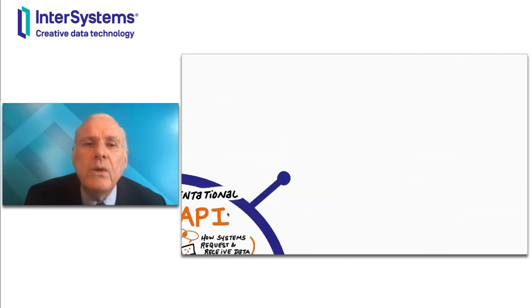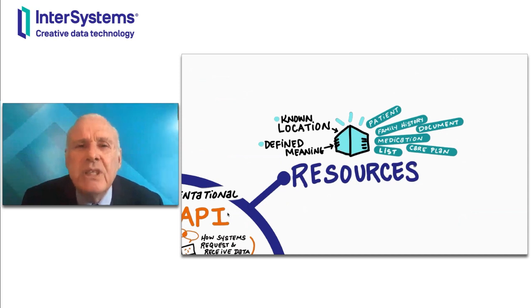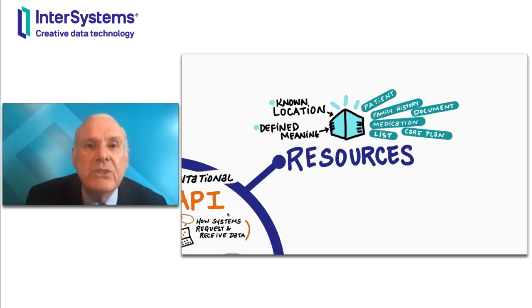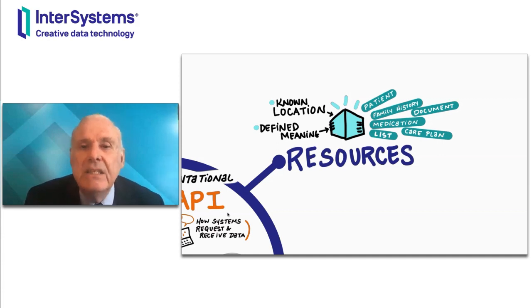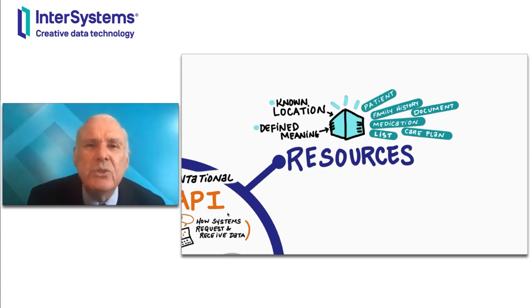There are a few concepts you need to understand to understand FHIR. The first is FHIR resources — resources as in URL, Uniform Resource Locator. FHIR resources have a known location on a server, a defined meaning per the FHIR specification, and they are discrete data concepts like a patient, a family history, a document, a medication, or a list. FHIR uses the same resource whether it's a list of patients or a list of medications, and the care plan resource connects all the pieces of data that make up an individual's care plan.